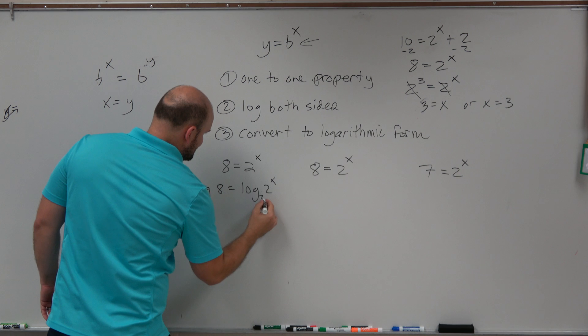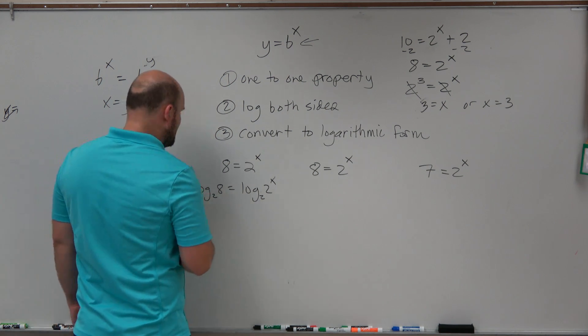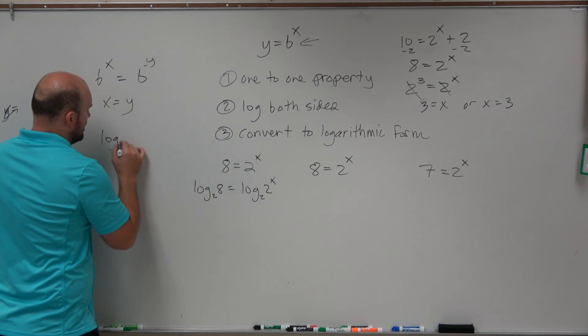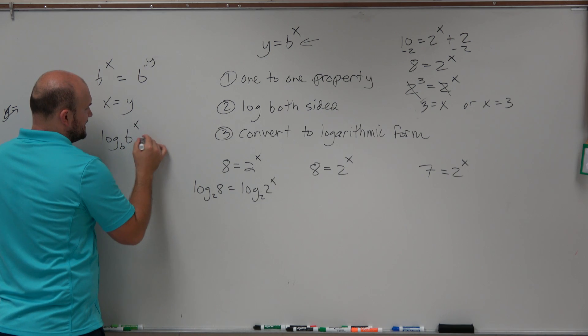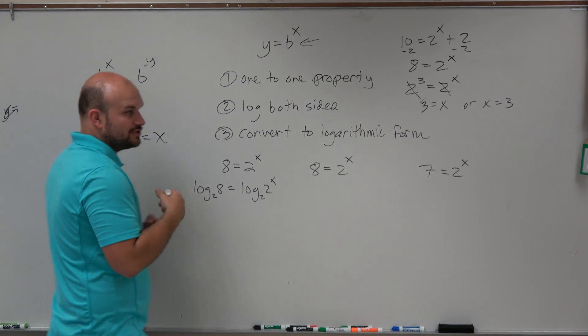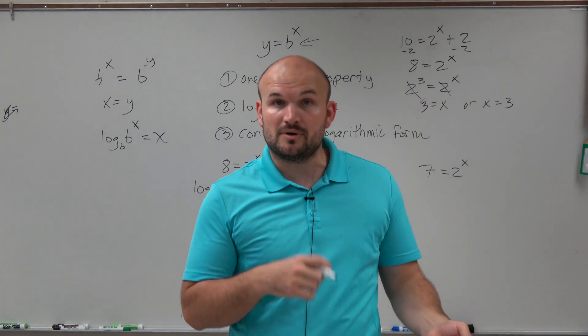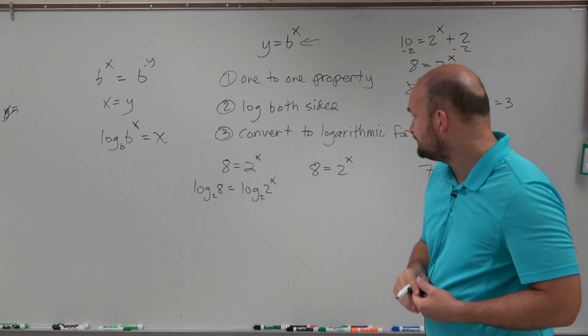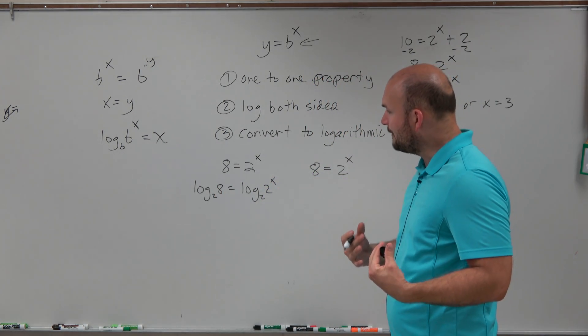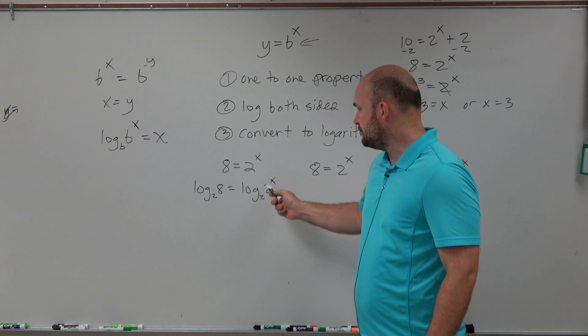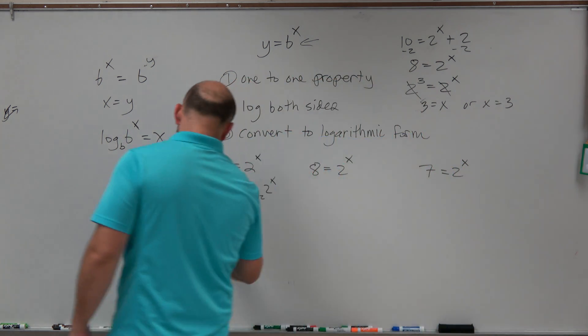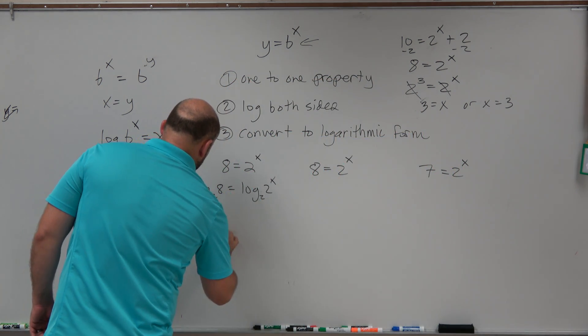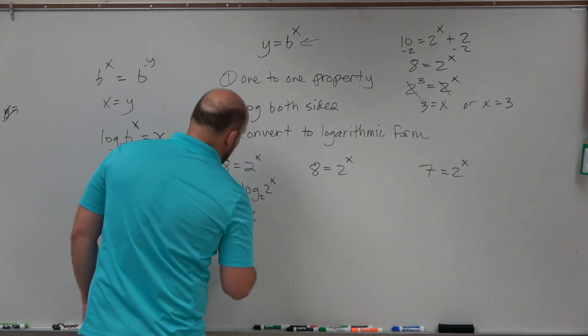Now, if you take log base 2 on the right side, you have to take log base 2 on the left side. And remember, log base b of b raised to the x just equals x. And that's a rule of logarithm that we need to remember from previous chapters. So now, what we have is we have log base 2 of 2 raised to the x. That just equals x. So we have log base 2 of 8 is equal to x.